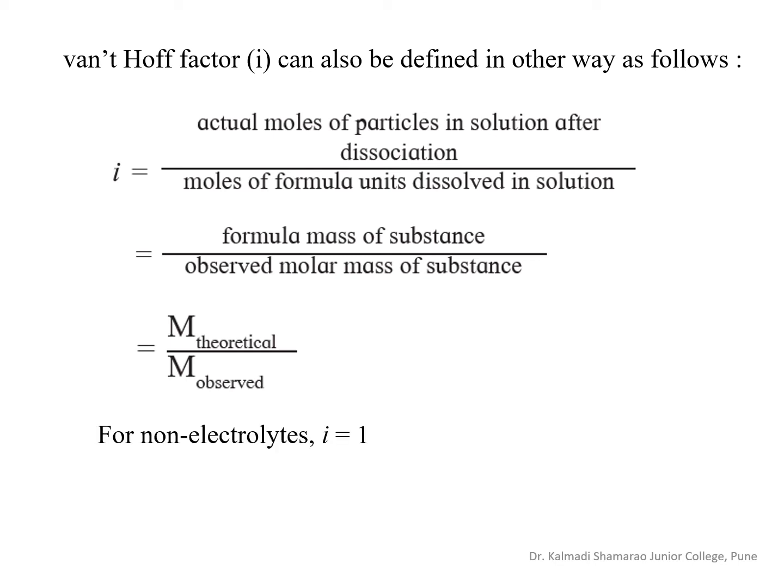For non-electrolytes, i is equal to 1. For NaCl and KNO₃, that is solutes which produce 2 ions in solution, i is equal to 2. For ionic compounds which produce 3 ions in solution, i is equal to 3. Thus, for strong electrolytes, the number of ions produced by one molecule of the electrolyte is its Van't Hoff factor i.